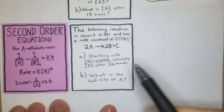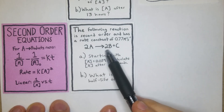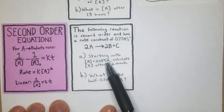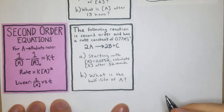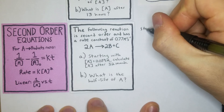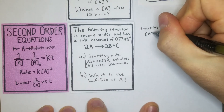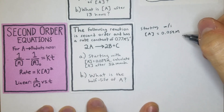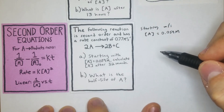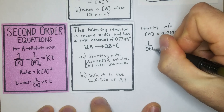The second problem: the following reaction is second order and has a rate constant of 0.777 M⁻¹s⁻¹. The reaction is 2A → 2B + C, starting with a concentration of A equal to 0.059 M. We need to calculate the concentration of A after 32 seconds, and then find the half-life of A.